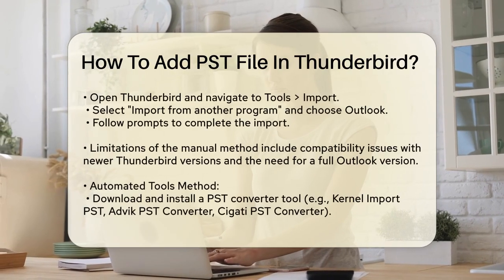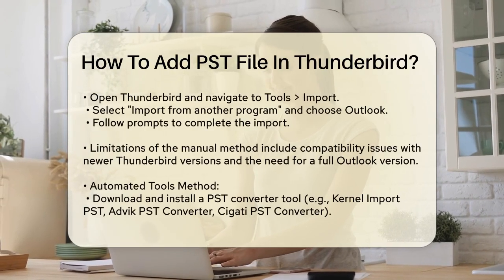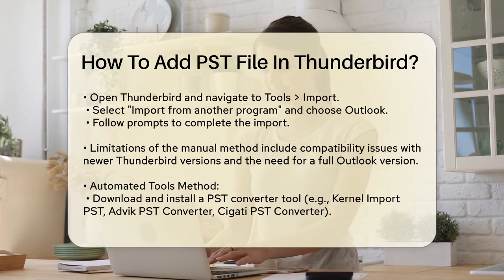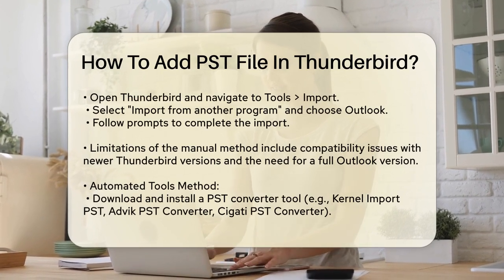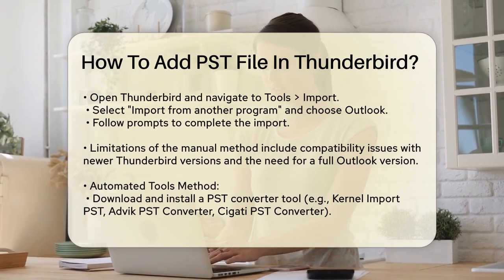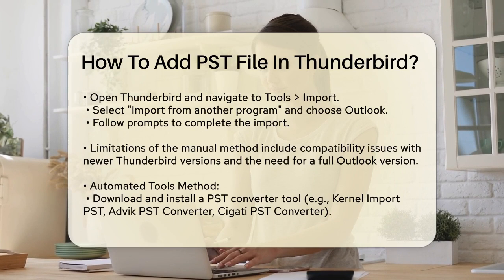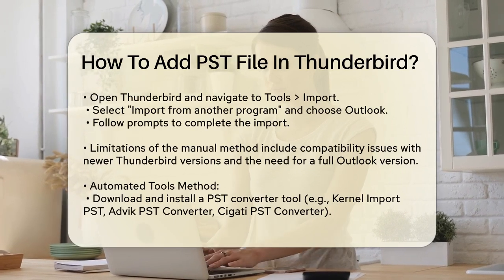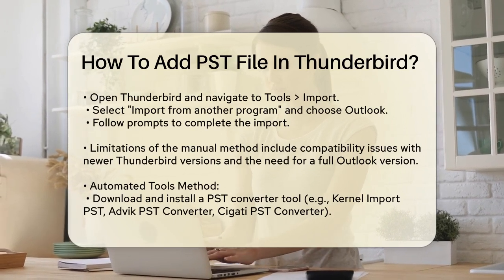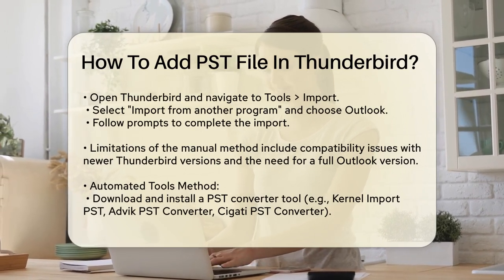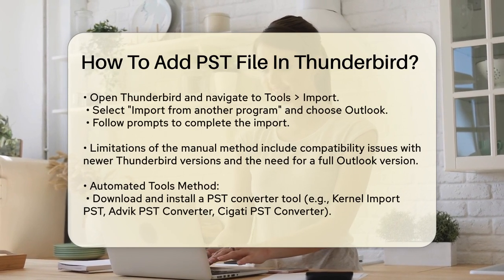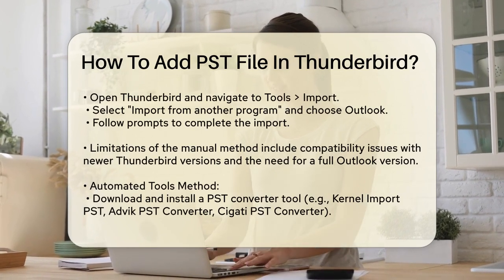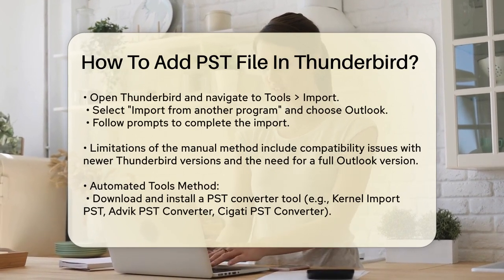Once the PST file is imported into Outlook, open Thunderbird. In Thunderbird, click on the menu icon, go to Tools, and select Import. Choose Import from another program and select Outlook. Follow the prompts to complete the import process.